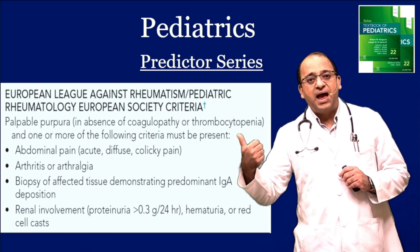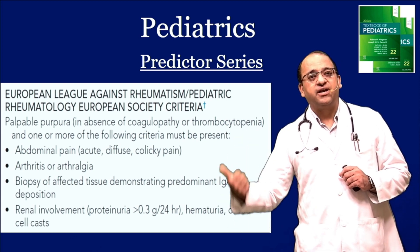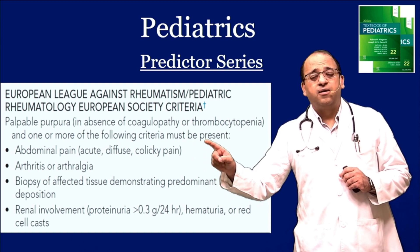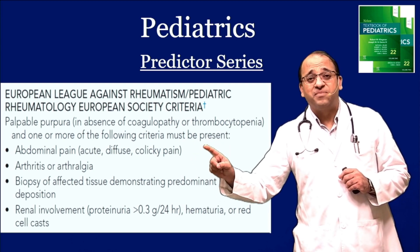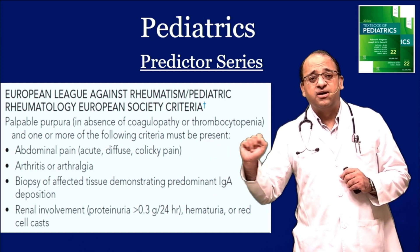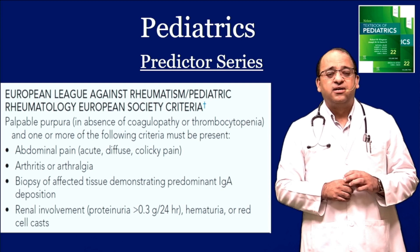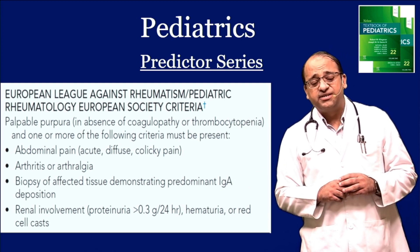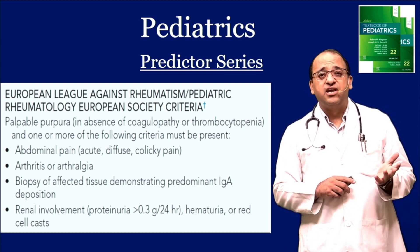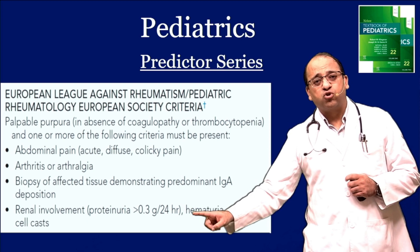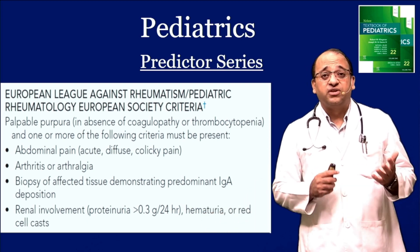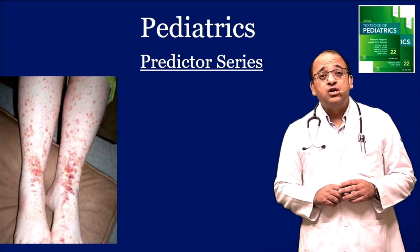The EULAR definition states you need to have palpable purpura without coagulopathy or thrombocytopenia, plus one of these criteria: diffuse pain abdomen or typical post-prandial pain abdomen due to mesenteric ischemia, arthritis or arthralgia, a biopsy showing predominant IgA deposits, and kidney involvement — which is mostly microscopic hematuria with or without proteinuria.